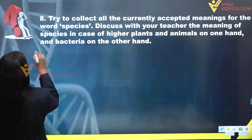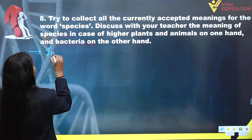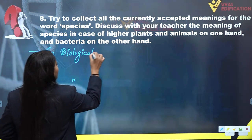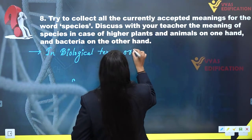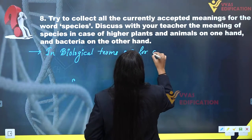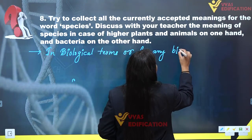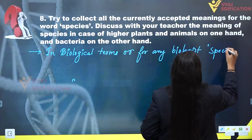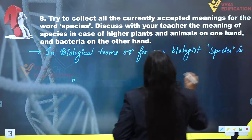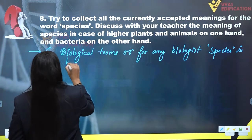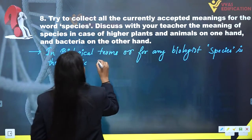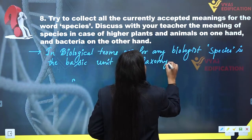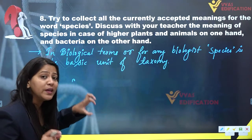So writing the answer: first of all, in biological terms, for any biologist, species is the basic unit of taxonomy.